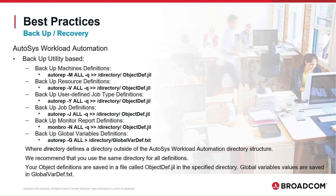To backup the monitor report definitions, enter the Autorep command followed by 'all' and all queue options, a directory where the backup will be created, and a file name ending with the JIL extension. To backup global variable values, enter the Autorep command with the JIL options, a directory where the backup will be created, and a file name ending with the TXT extension. We recommend that you use the same directory for all definitions.